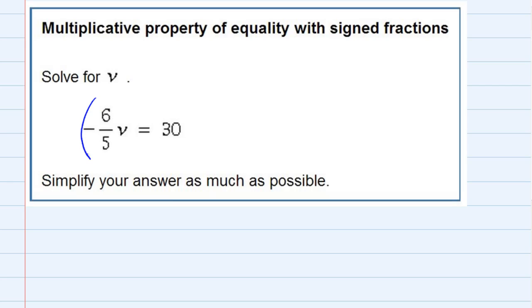So to get rid of the negative six fifths coefficient, I'm going to multiply by the reciprocal negative five sixths. Now I can do that by the multiplicative property as long as I also multiply the other side by negative five sixths. So whatever I multiply on one side I have to multiply on the other side as well.